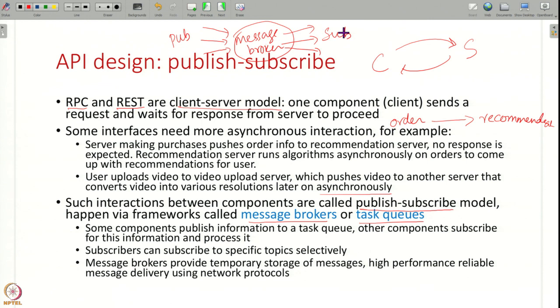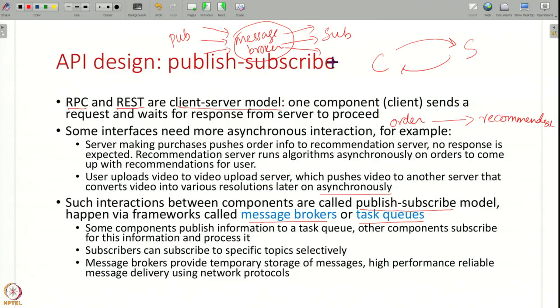What you are doing is adding an intermediary between two components instead of them directly interacting in a client-server manner. One component pushes information, the other reads it later on. Where the interaction between components does not have to be synchronous and is asynchronous, these pub-sub APIs can be used. There are many frameworks and message broker or task queue software available today to help you build these pub-sub APIs and have this kind of asynchronous interaction between components.